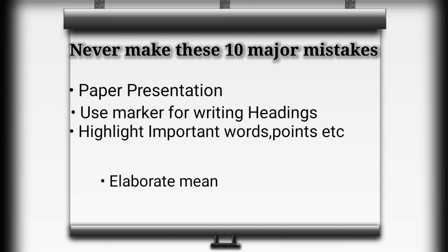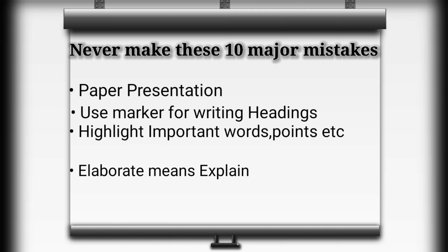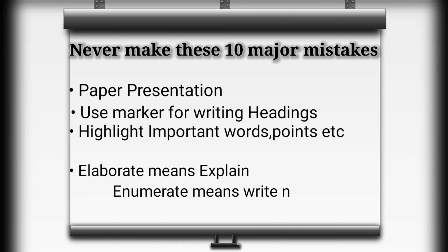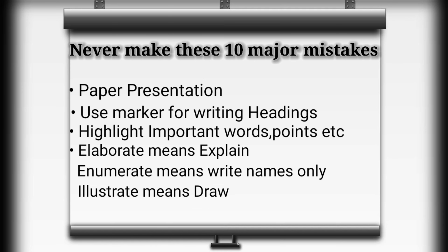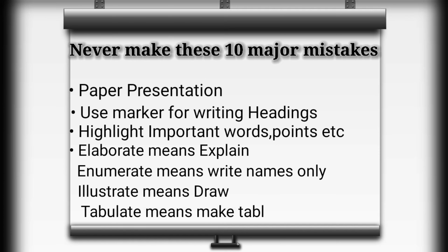The seventh most important mistake is that students do not understand the terms of the question — for example, elaborate, enumerate, illustrate, tabulate. If a question asks you to elaborate on enzymes, students just draw a diagram thinking it's about drawing. If asked to enumerate the classification of enzymes, students not only enumerate but also explain everything about transferases and so on. Never ever make such mistakes. If asked to enumerate, just write the names. If asked to elaborate, you explain.